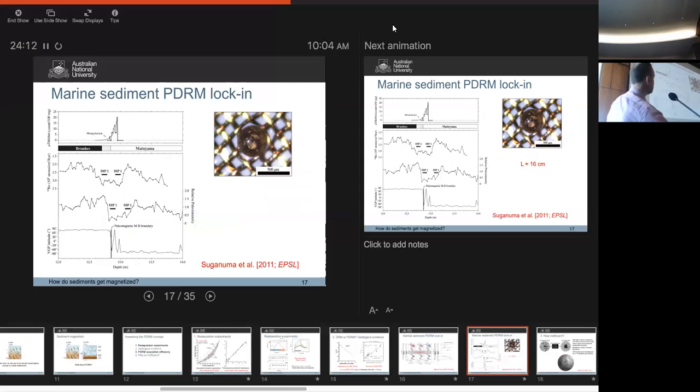Another example of a PDRM lock-in is from the work of Yosuke Suganuma. Dave Heslop and I were co-authors on this. It was a Brunhes-Matuyama boundary record with a relative paleointensity, dip 1, dip 2, Australasia microtektite event, etc. And the beryllium-10 record with dip 1 and dip 2.